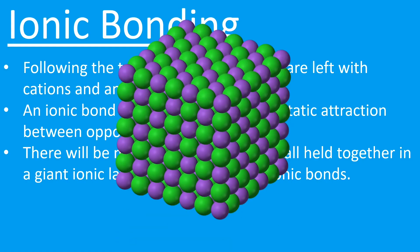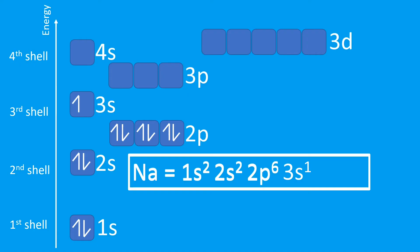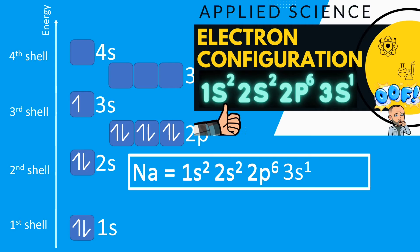We can see that in this diagram here: for example, the purple might represent a positive metal cation and the green might represent a negative anion. We have a huge, regular lattice of positive cations attracted to the negative anions — this is a giant ionic lattice held together by strong ionic bonds.